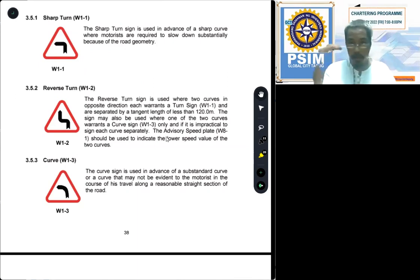Reverse turn. We have to turn and another turn, so reverse turn. That is type W1-2, used where two curves in opposite direction each warrant a turn sign. So rather than putting two sharp turn signs in succession, we just need to put up one single warning sign saying reverse turn, type W1-2.